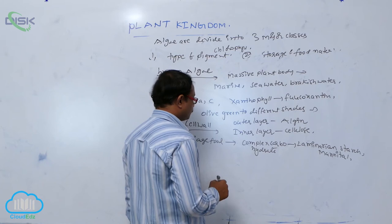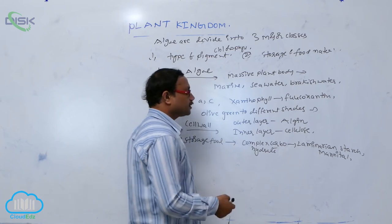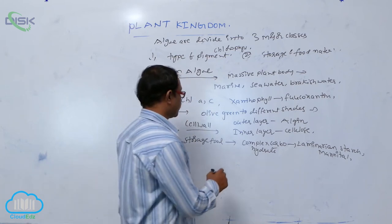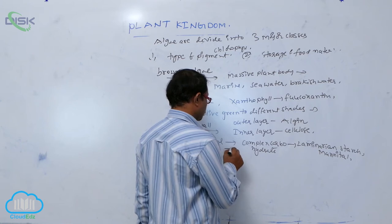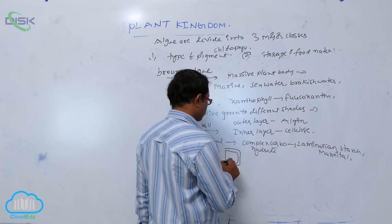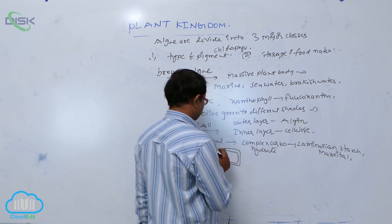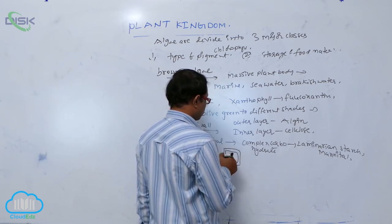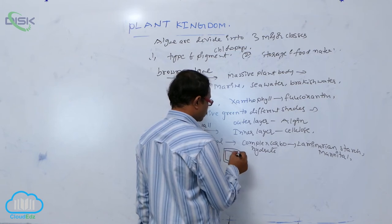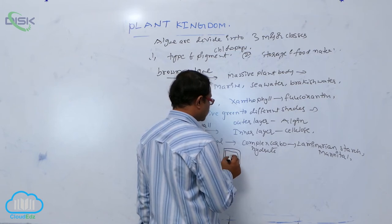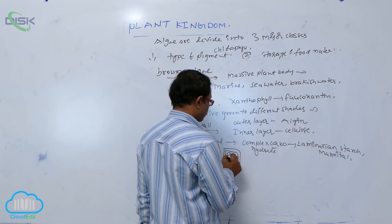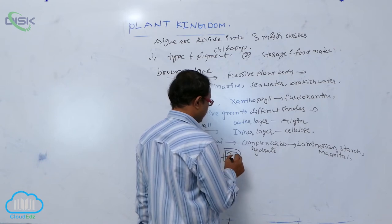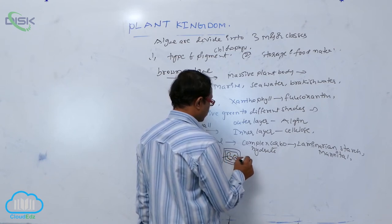In the cell structure of brown algae, outside the cell wall, a large vacuole is present, and the nucleus is present at the periphery.